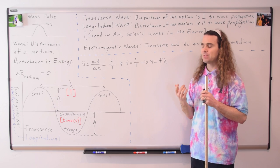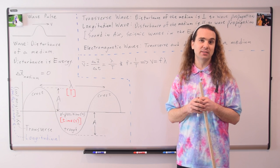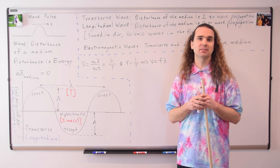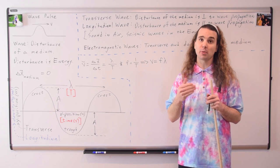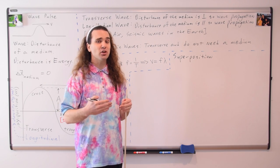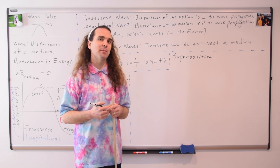A wave is not a physical object — it is energy in the form of a disturbance of a medium. Which means two physical objects cannot occupy the same space at the same time. However, two waves can occupy the same space at the same time, and we determine what happens using something called superposition. Superposition is the description of how waves interfere with one another when they occupy the same space — basically, we add the amplitudes together.